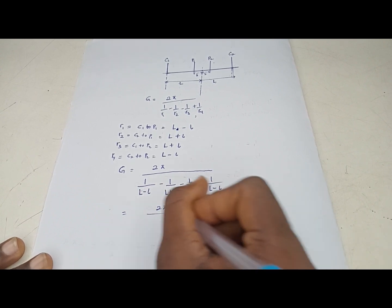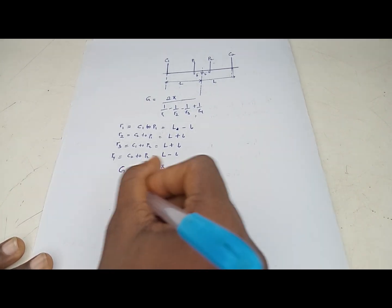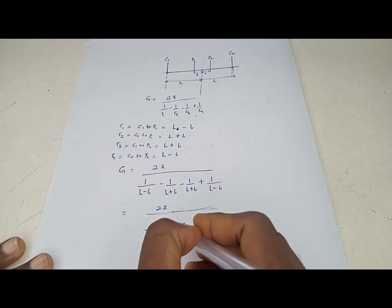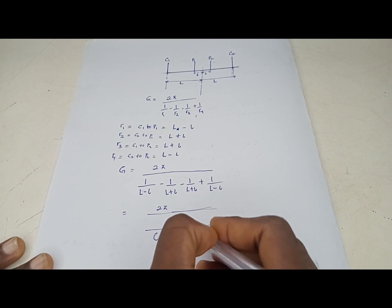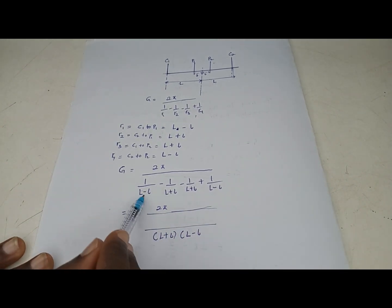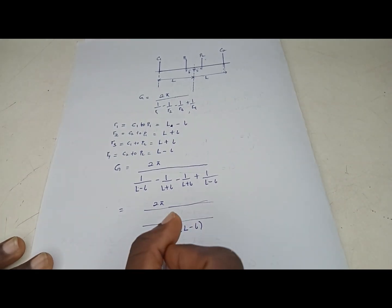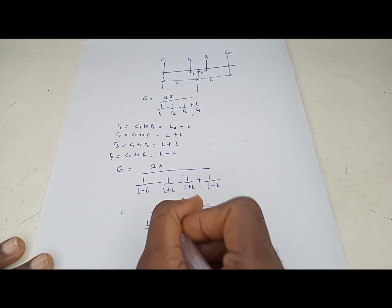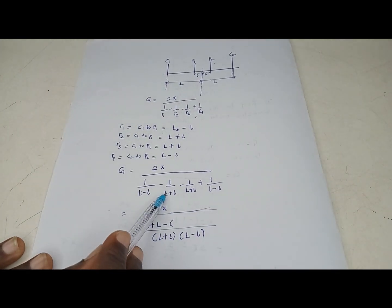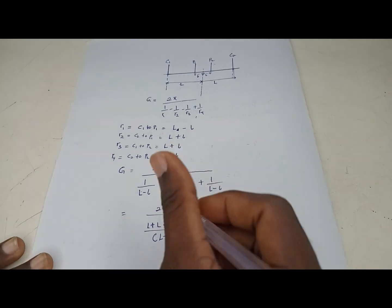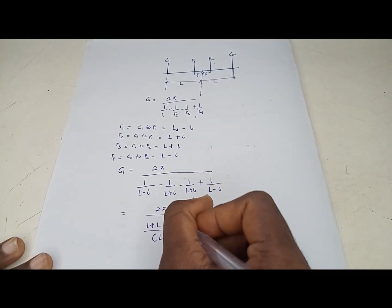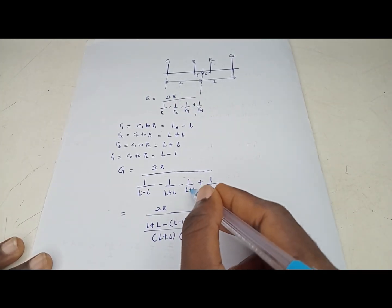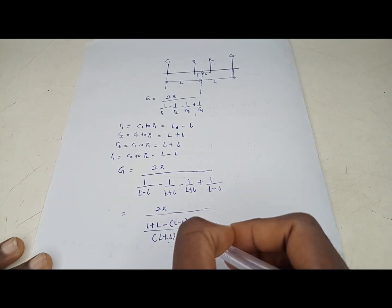Next we find the LCM of the fractions in the denominator, which is (L + l)(L - l). Expanding the numerator with the LCM, each term contributes its cross-multiplied factor. Be careful with brackets: the negative signs in front of the middle terms must be distributed through the brackets.